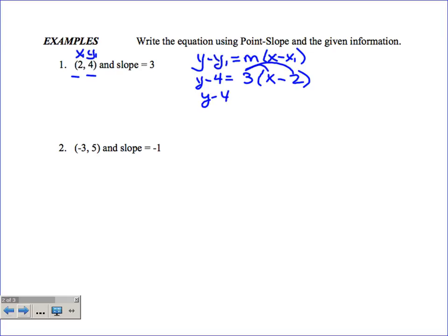The next step is I'm going to distribute the 3. So I would have y minus 4 equals 3x minus 6. The next thing I want to do is isolate my y, so I will add 4 to both sides. I'll have y equals 3x minus 2. I'll put a box around this and say that I'm done with this problem.